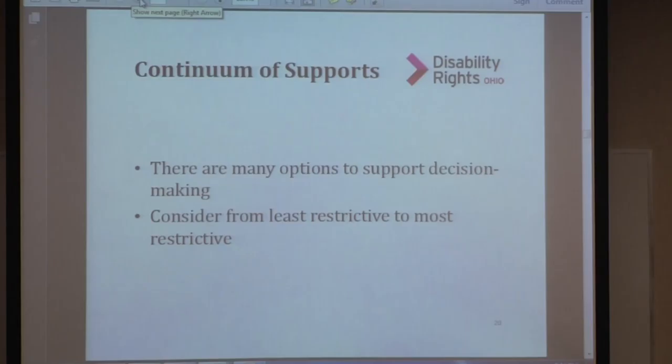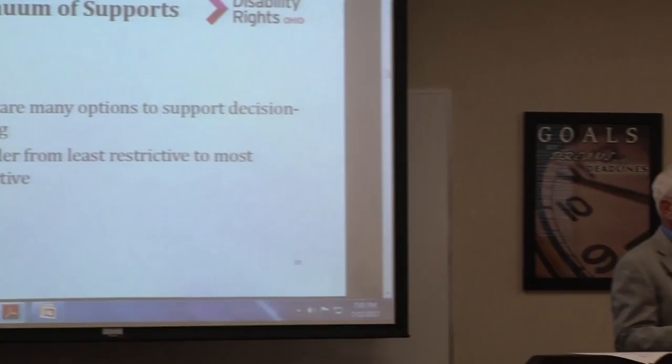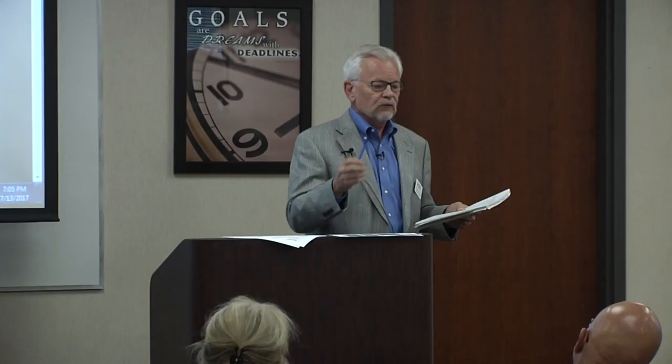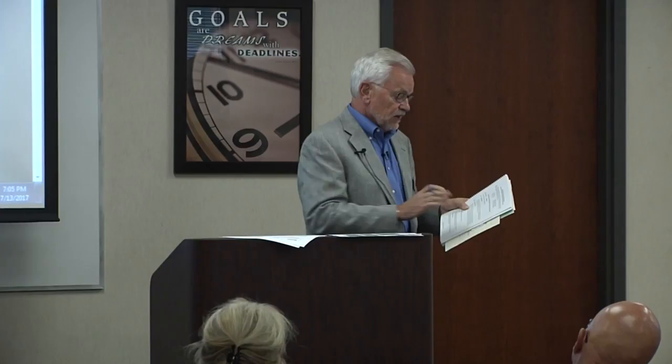This notion of least restrictive to most restrictive appears in this slide, and also in the rules of superintendence — the guardianship rule the Supreme Court promulgated — which is based on work I and others did on a subcommittee that designed standards for guardianships. These rules are based on those standards. Ohio is a best interest state, meaning you have to look objectively at what is in the best interest of the person.